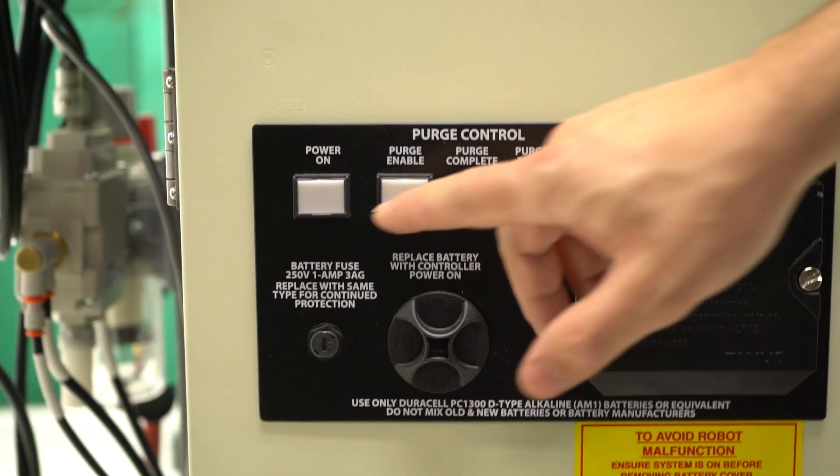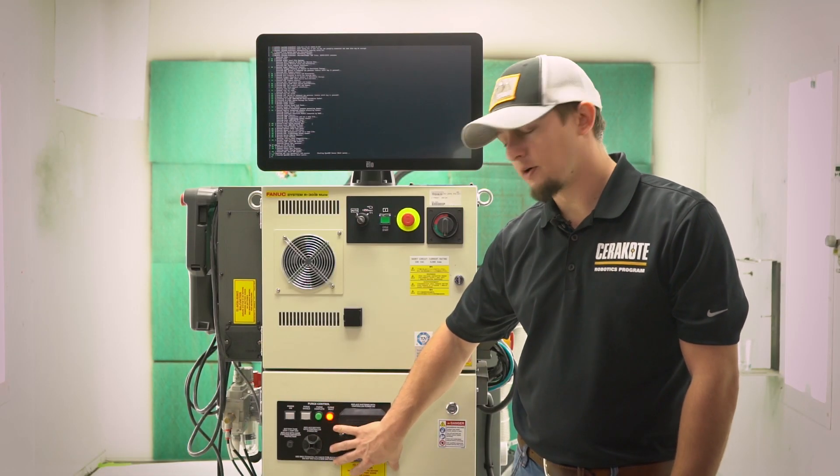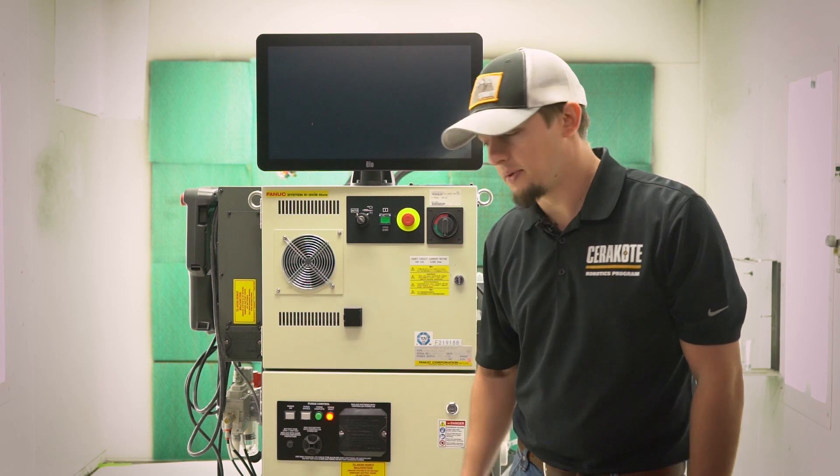We'll depress the power on button on the purge controller. As you can see, we have a purge fault. It's because we don't have air pressure to the unit yet, so we'll hook that up next.